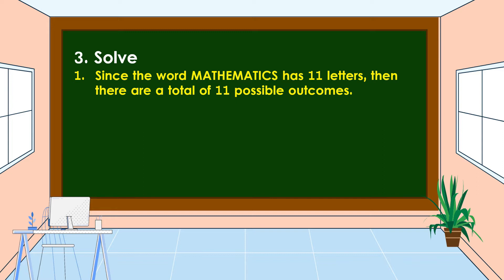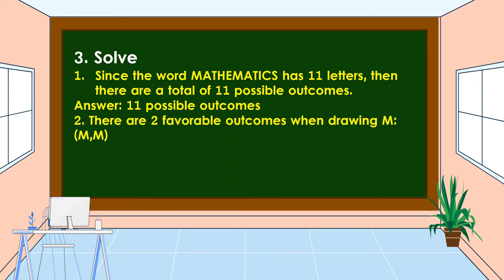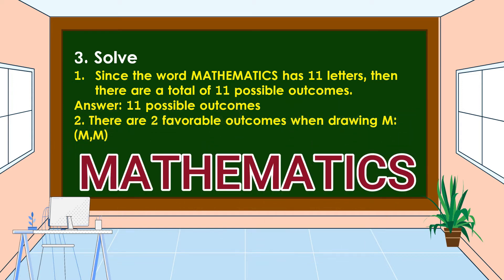For the first question, since the word MATHEMATICS has 11 letters, there are a total of 11 possible outcomes. So our answer is 11 possible outcomes. For the second question, there are two favorable outcomes when drawing M — we have two letter M's in the word MATHEMATICS.